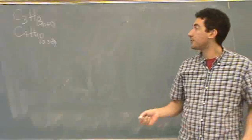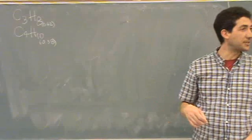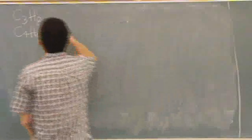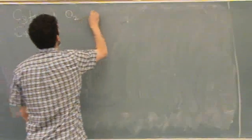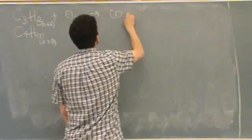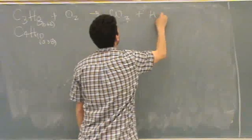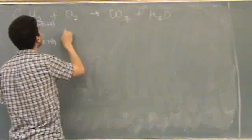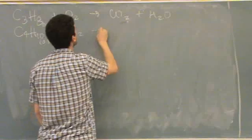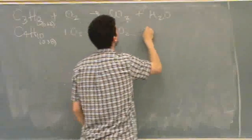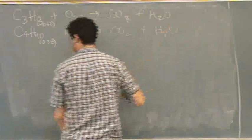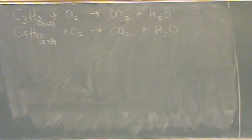What we'll need to do first, we want the enthalpy of combustion, so let's write out the combustion reactions. Plus O2 goes to CO2 plus H2O. And same here. Plus O2 goes to CO2 plus H2O. So, now we want to balance, so let's balance these.